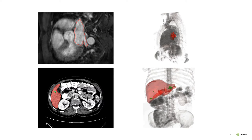Here are two more examples of 3D segmentation. The top one is 3D heart segmentation in MRI, and the bottom one is liver and lesion segmentation in 3D CT. The left-hand side is the segmentation result overlaid with the original image, and the right-hand side is the segmentation result after rendering.